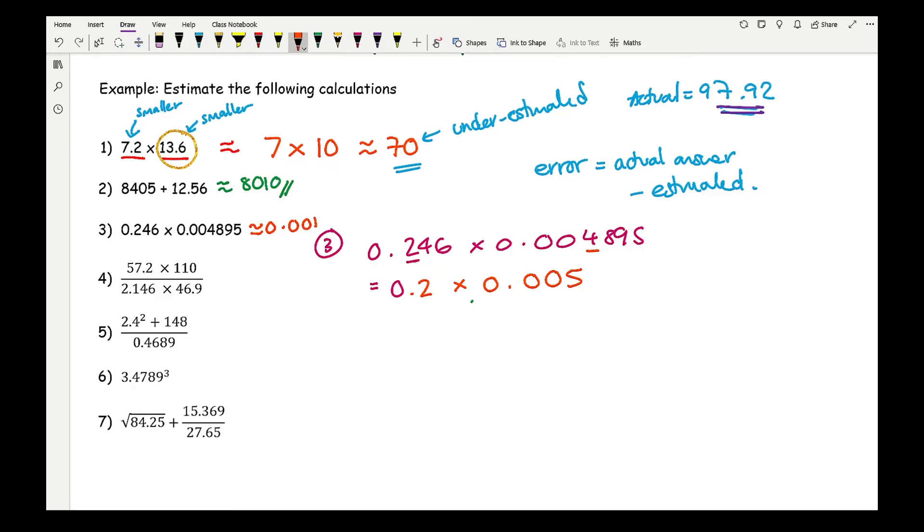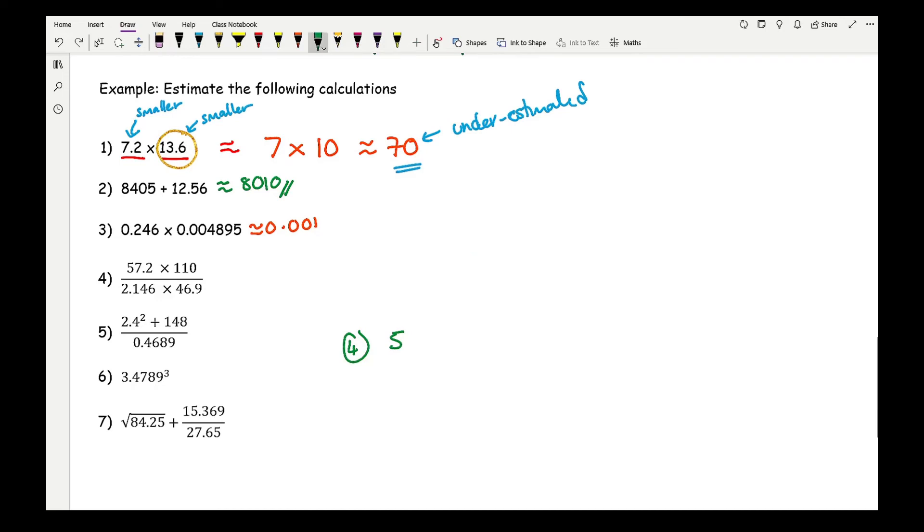Then moving on to question 4. Now this one we've got quite a lot of numbers, which again seems to be very popular when it comes to exams. So here, if I just create a bit of space, let me just get rid of working out for this. So with this question, we've got, let's get rid of all that as well.